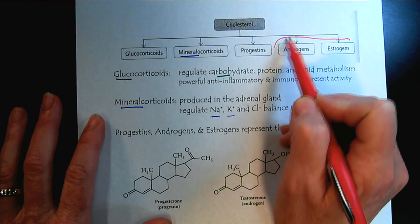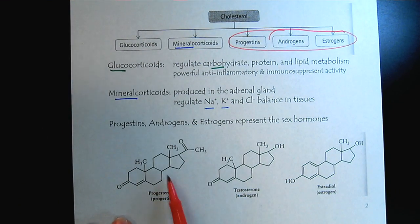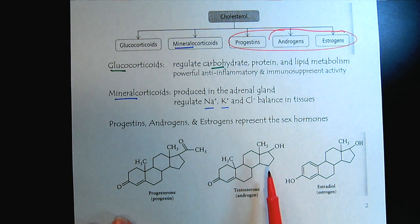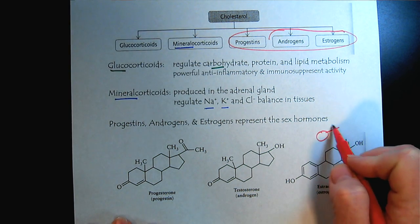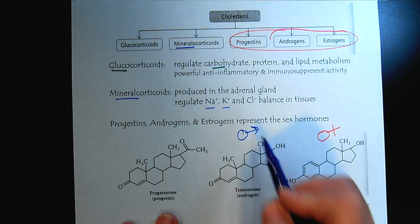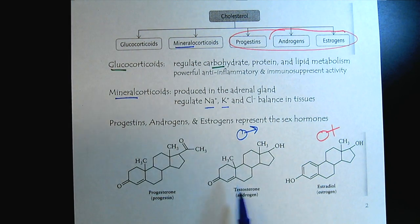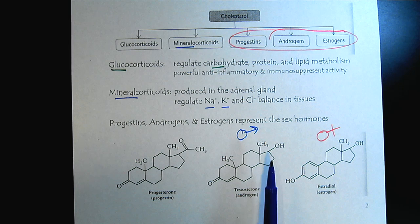The last group would be the sex hormones: the progestins, like progesterone; the androgens, such as testosterone, which we think of more as the male hormones; and the estrogens, such as estradiol, which we think of as female hormones. Within us, we always have a mixture of both — it's just which dominates. And the female hormones are synthesized from testosterone.